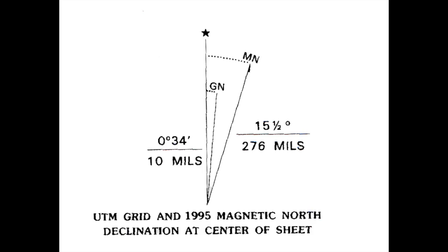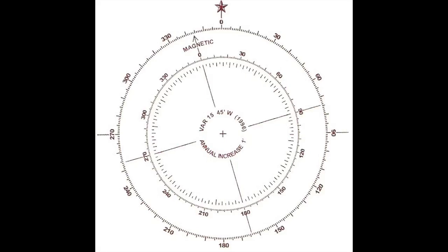There are several ways to determine a current declination value for your location. Usually you can find the information on a declination diagram printed on the map. But remember, if your map is really old, the declination will be out of date.